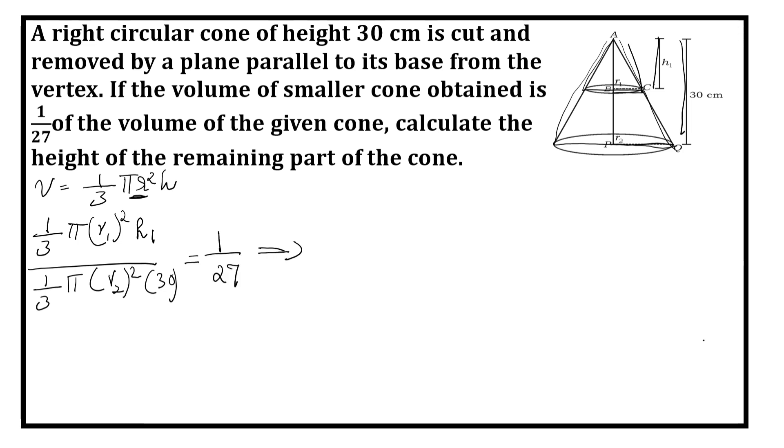Now you can write it as, you can cancel these two. (r1/r2)², the whole square, times h1/30 is equal to 1/27, which is (1/3)³.